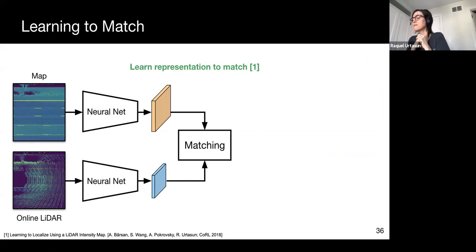Our recent work has addressed the need for intensity calibration by learning a deep invariant mapping for matching in an end-to-end manner. First, we pass the online lidar sweep and the map through separate, fully convolutional networks to compute corresponding embeddings.